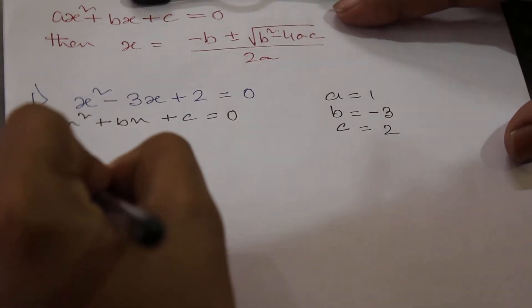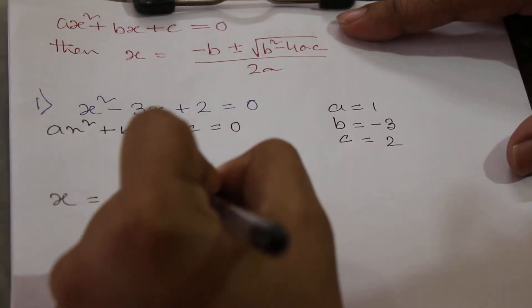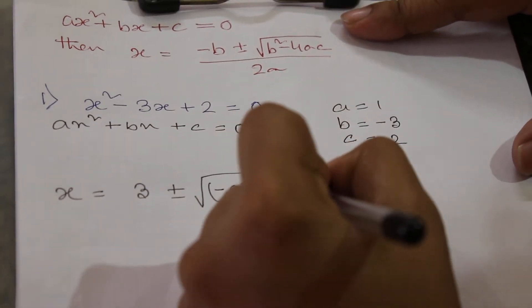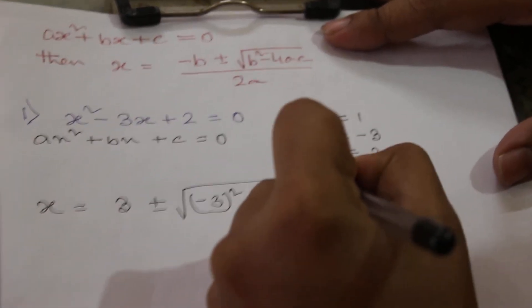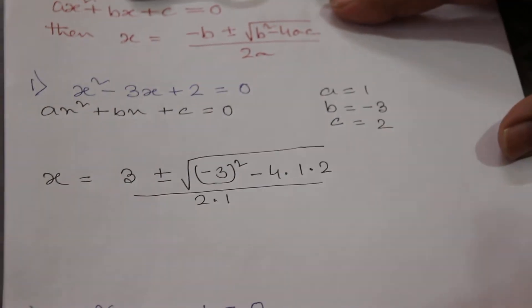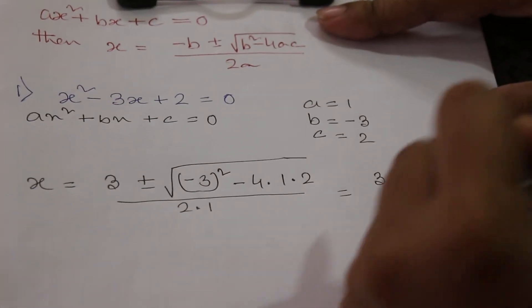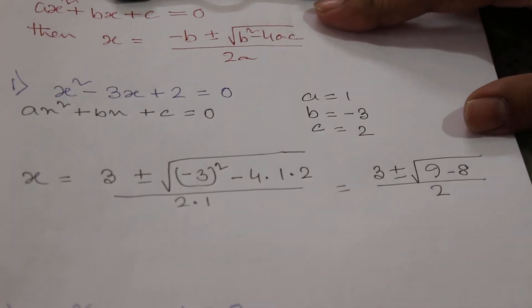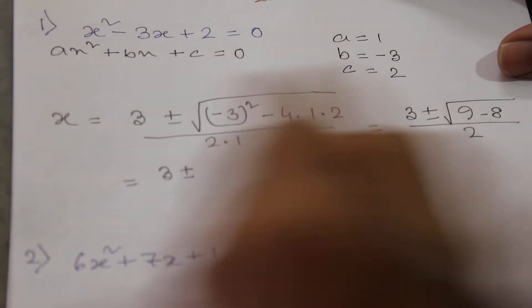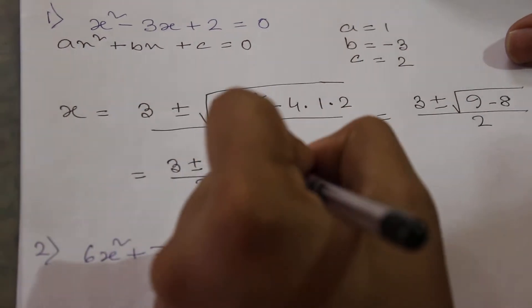We can use this formula: −b will be equal to +3, plus minus √(b²−4ac) = √((−3)²− 4×1×2) divided by 2×1. This will be equal to √(9−8) / 2, which is equal to (3 ± √1) / 2, and since √1 = 1, we get (3 ± 1) / 2.